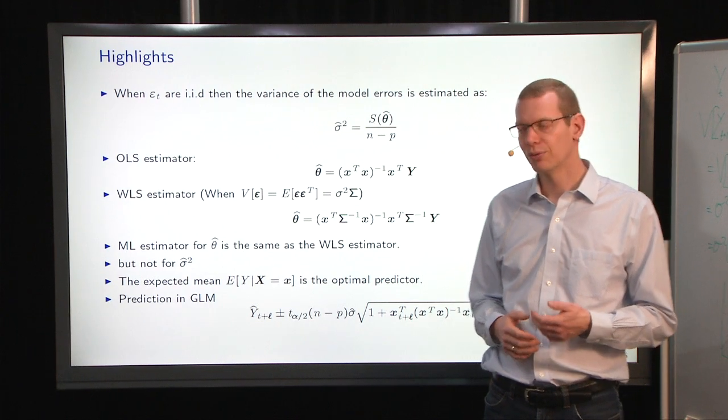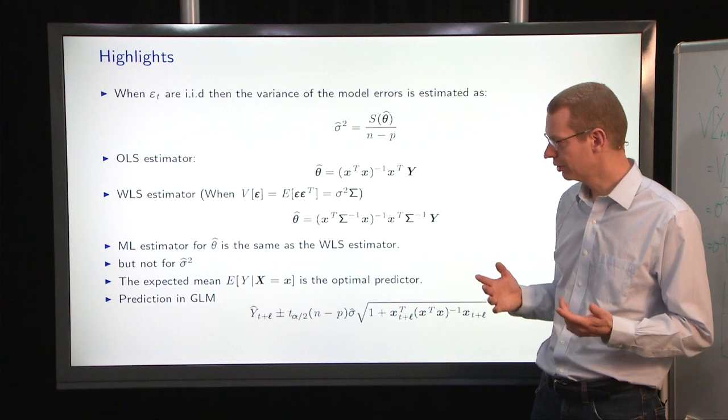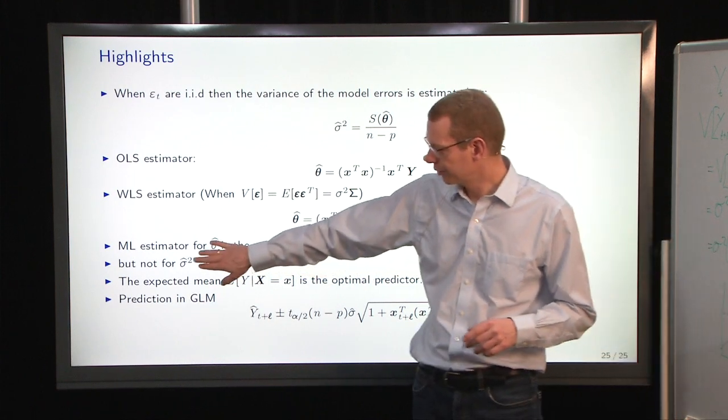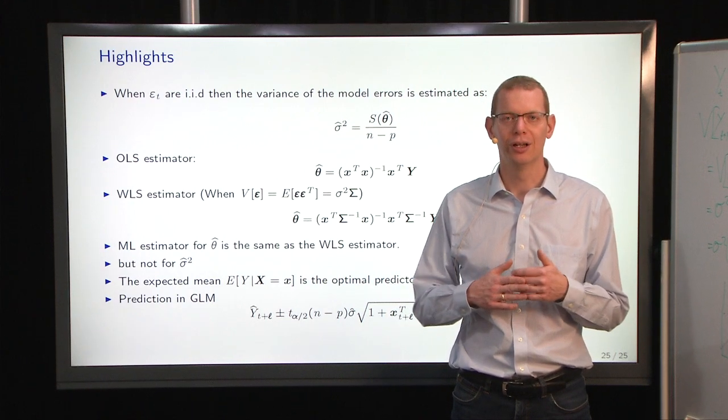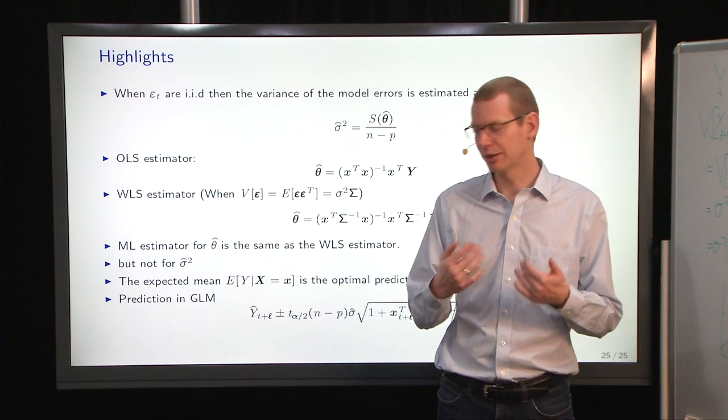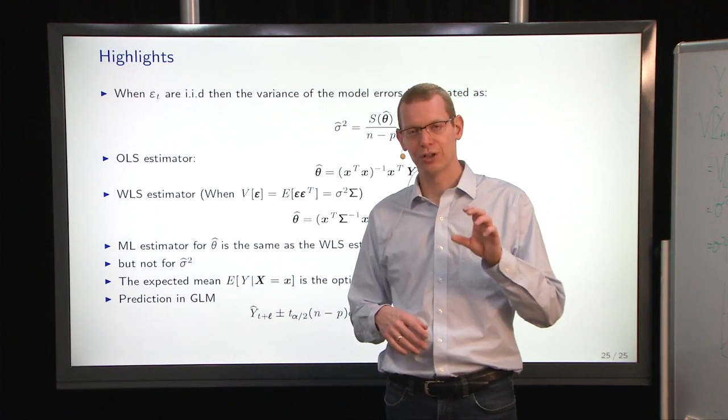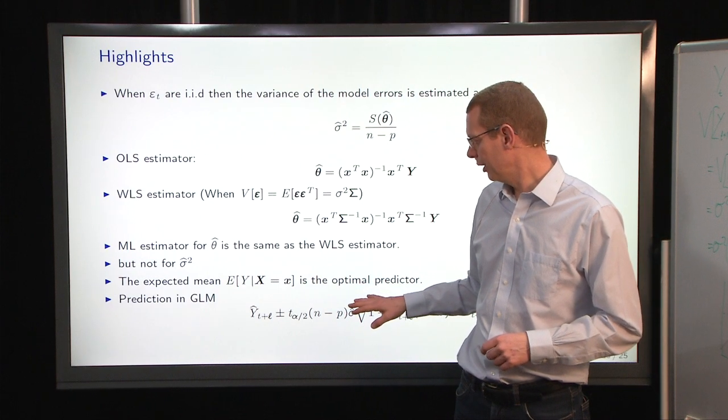If we use maximum likelihood, then we get to the same estimator as for the weighted least squares, so that's good for the estimator, but the estimator of sigma hat square is a little bit smaller in the likelihood case, so it has a little small bias because we divide it by n instead of n minus p. That is the usual denominator.